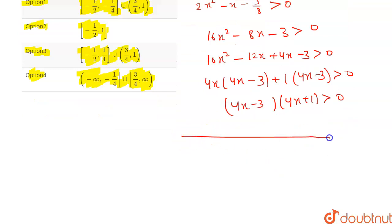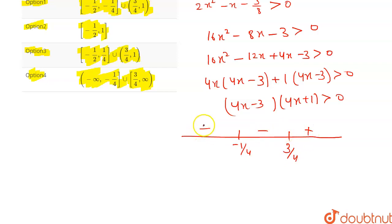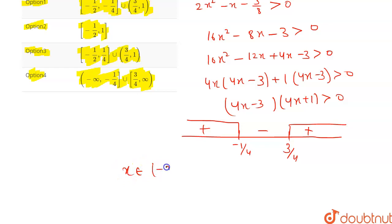Now draw a number line and mark the critical points: -1/4 and 3/4. The sign will be plus, minus, plus. We need this quantity greater than 0, so the favorable portions give x ∈ (-∞, -1/4) ∪ (3/4, +∞).